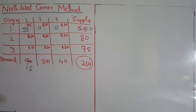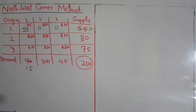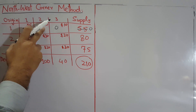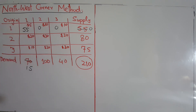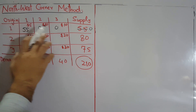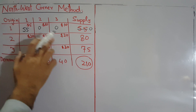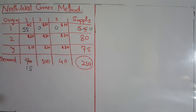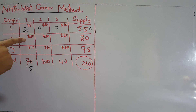Now we look at the next cell. The first cell is no longer available, and this one is no longer available either. In the remaining table, we look for the North-West corner cell again — the upper-left corner of what remains — which is origin 2 to destination 1.